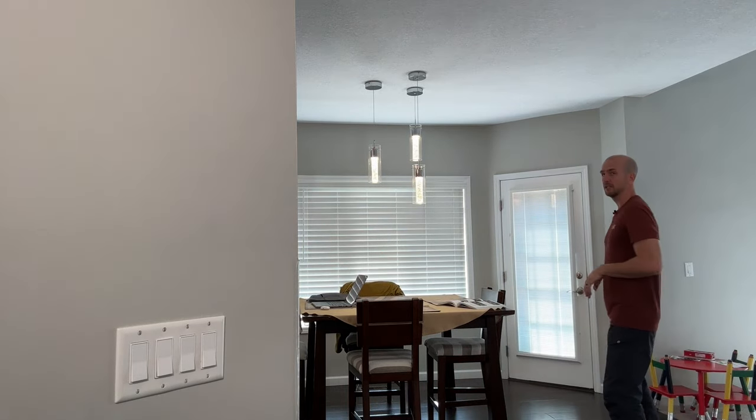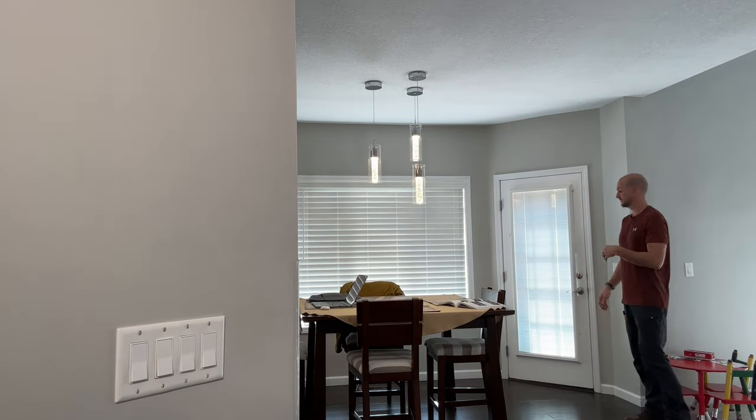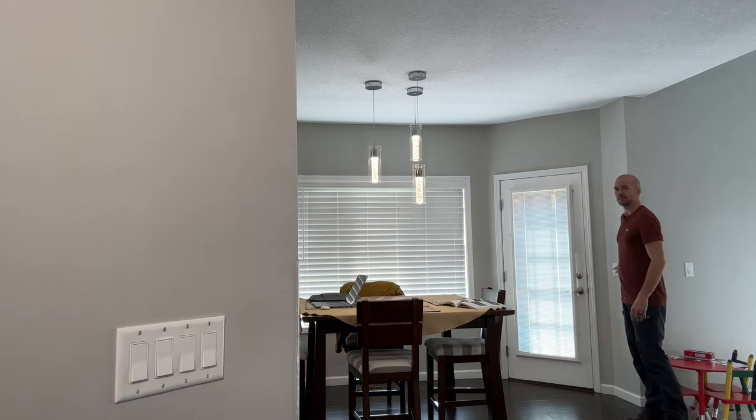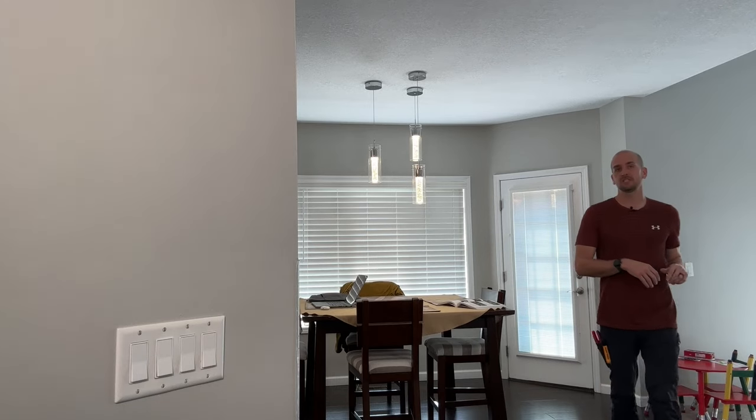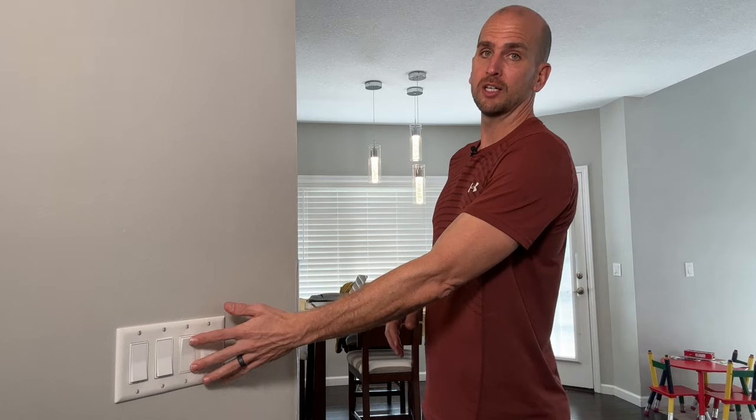The only problem is this is a three-way light switch, so it means we have a light located here but also one located over here by our door that goes outside. You can see this flickers the light but it doesn't actually turn it on or off, and if I leave this switch in the down position, now all of a sudden I've lost the functionality at this light switch.